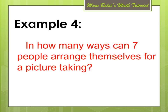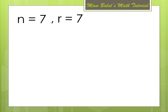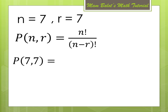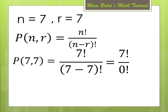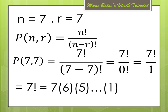Another example: in how many ways can 7 people arrange themselves for a picture taking? In this case, N is 7 and R is also 7, since all of them will be arranging themselves. Using the permutation formula, P(7,7) = 7 factorial divided by (7 minus 7) factorial = 7 factorial divided by 0 factorial. Since 0 factorial is defined as equal to 1, that becomes 7 factorial divided by 1. And 7 factorial equals 5,040. So there are 5,040 ways that they can arrange themselves in a picture taking.